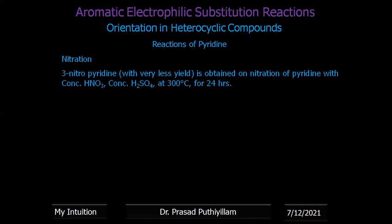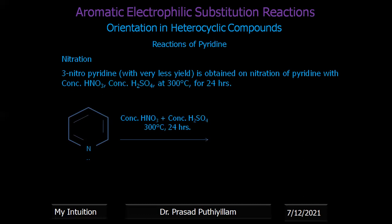Nitration: 3-nitropyridine can be obtained by nitration of pyridine with concentrated HNO3 and concentrated H2SO4 at 300°C for 24 hours, but with very low yield. This is one of the important reactions — how NO2 group or NO+ will attack, which position is favored, and what reaction conditions are required to get 3-nitropyridine. The yield is only 6%, but it is still considered a good example for the nitration reaction with pyridine.